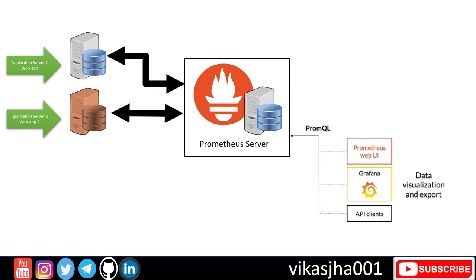So far in this course we have learned how to install Prometheus server and then how to install Node Exporter on a couple of servers. We have two servers — web app and web app 2 — on which we have installed Node Exporters. Prometheus server connects to them, gets their metrics, and we use the Prometheus web UI to view all the metrics, statistics, and graphs.